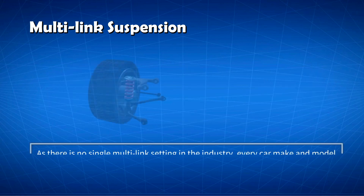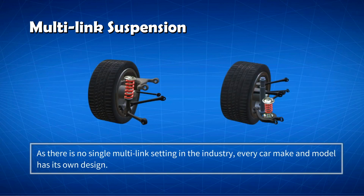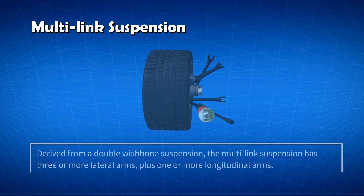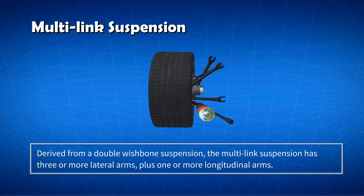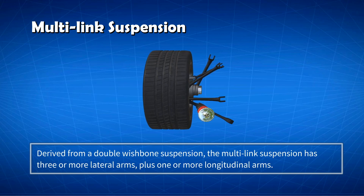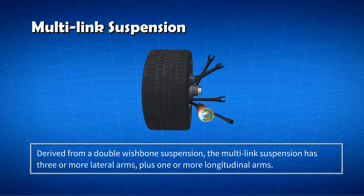As there is no single multilink setting in the industry, every car make and model has its own design. Derived from a double wishbone suspension, the multilink suspension has three or more lateral arms, plus one or more longitudinal arms.